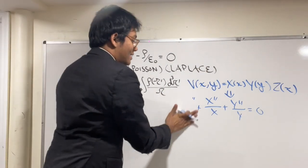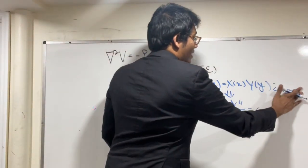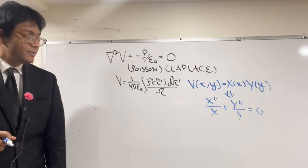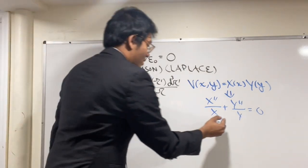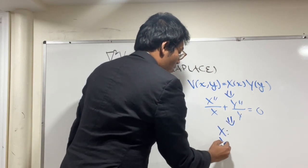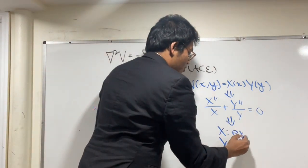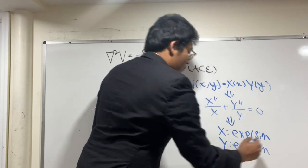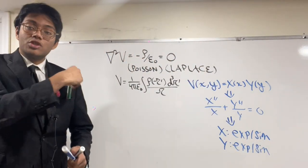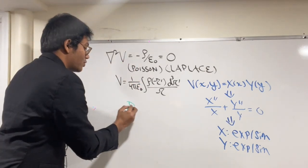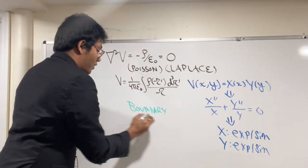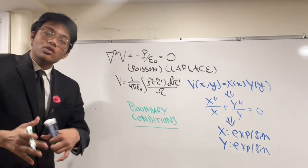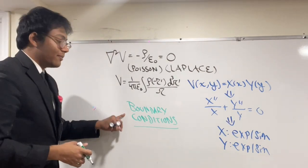After obtaining that differential equation, we had to decide what kind of function X and Y should be — exponentials or sinusoidals, oscillating or non-oscillating. To make that decision, we look at our boundary conditions, which are the physical part of the problem. This is the mathematics; the boundary conditions tell us which functions to choose.